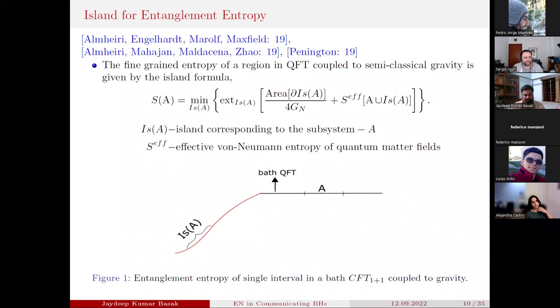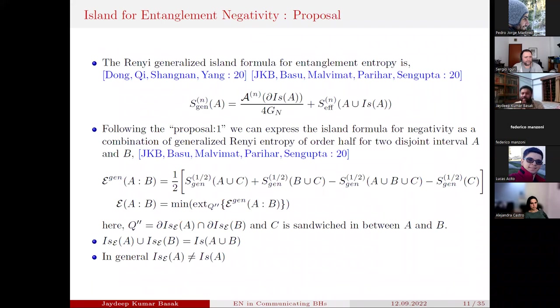The first term has the area of the boundary of this island, and the second term is the effective entropy of the quantum matter field sitting on the union of the island and A. To understand that, let's take this figure where we have the bath QFT and A is sitting there. Another sector emerging from the gravity part is denoted by the red part—that is the island of A. Having these two, we are going to formulate the generalized entanglement entropy, and then we finally extremize and minimize over the position of the island, and we get the final formula for fine-grained entropy.